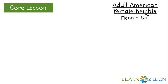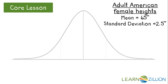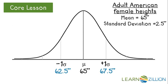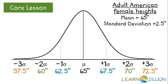Assume that adult American female heights are normally distributed with a mean of 65 inches and a standard deviation of 2.5 inches. We can sketch our normal curve, with the mean of 65 inches directly in the center. Applying the empirical rule, we go out one, two, and three standard deviations — subtracting and adding 2.5 inches at each step — to label all values on the curve.